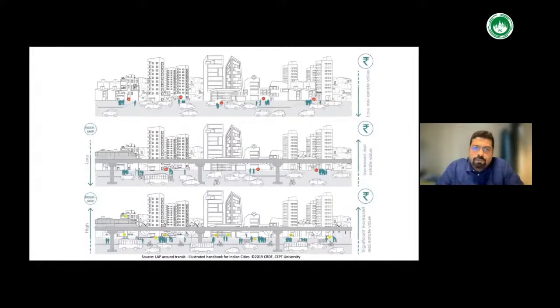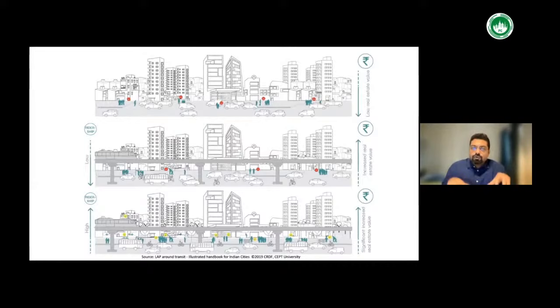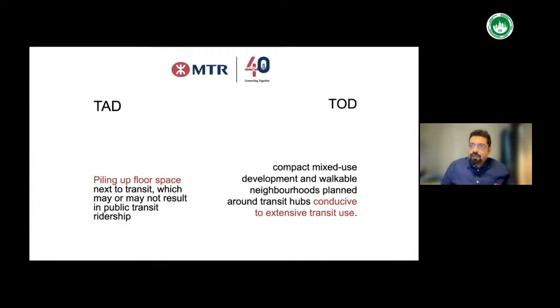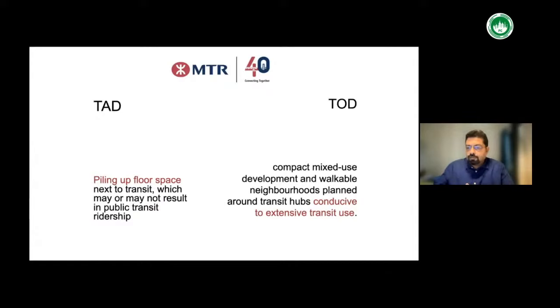People are not very happy in many situations in our cities. You insert a transit and the situation remains the same. It's only when you start investing in that area and making it better that life becomes better for people. We need to differentiate between TOD and TAD — Transit Adjacent Development — which is any random development that happens around transit, just piling up floor space. Whereas what we need is compact development: mixed-use, walkable neighborhoods conducive to more transit use. That's where our transit systems, currently struggling with ridership, will also get more riders.